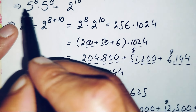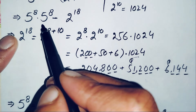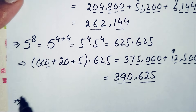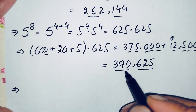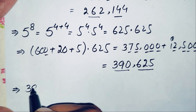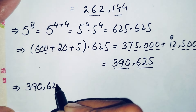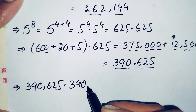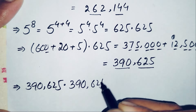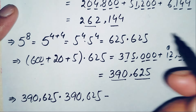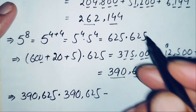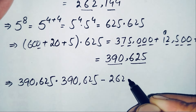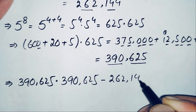So we replace 5 raised to power 8 with its value. The equation becomes 390,625 times 390,625 minus 262,144. Now we will multiply these two numbers without using a calculator.